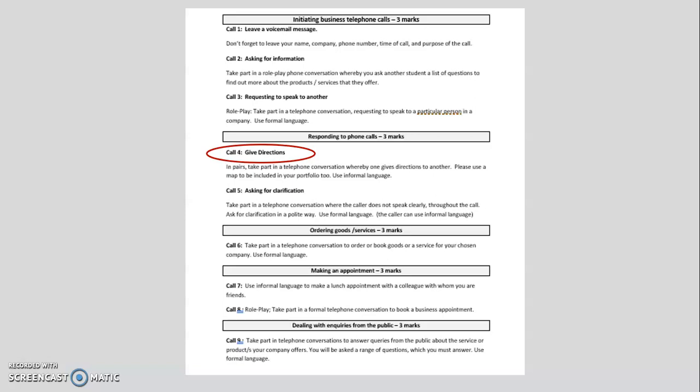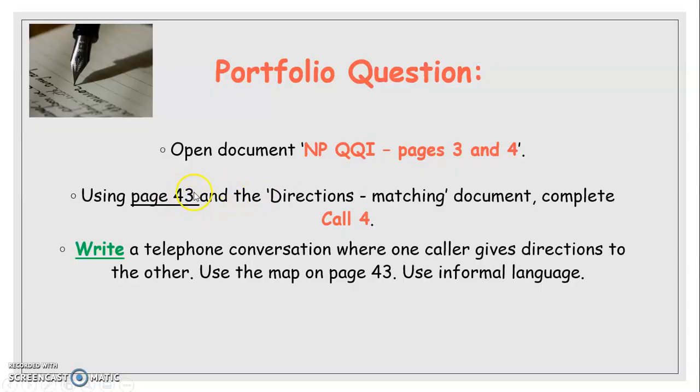And this is that question. Call 4, give directions. In pairs, take part in the telephone conversation whereby one gives directions to another. Please use a map to be included in the portfolio. Use informal language. The map that we will use is the map on page 43. So, download page 43 and use that map to write the conversation. Write the conversation, save it and email it to me. And I will print it off and put it into your portfolio.